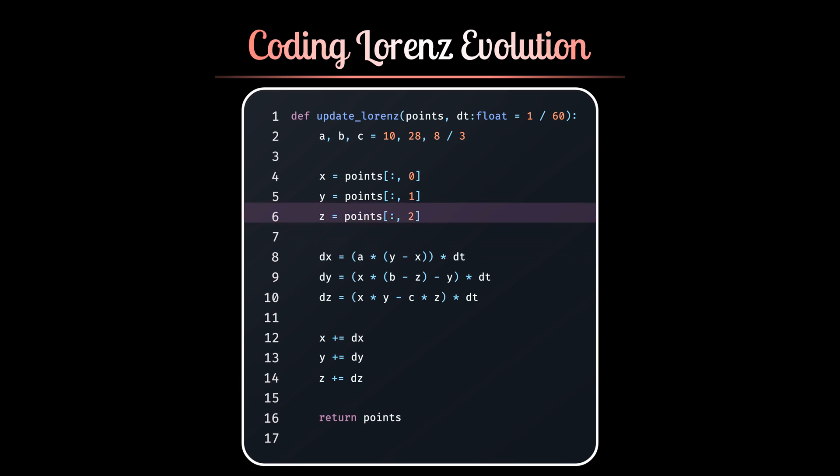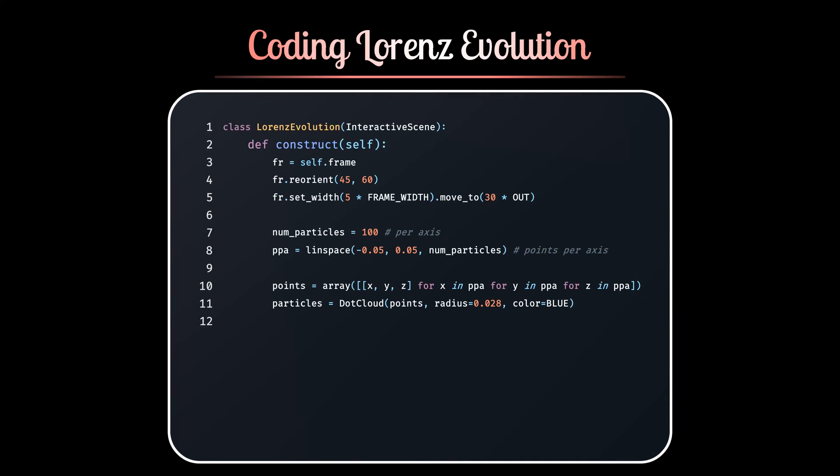Here, dt is our old friend, 1 divided by frame rate. And to apply this function continuously at every frame to these dots, we can use the addUpdater method. And after adjusting the frame size and orientation, we are done. See, this is how it turns out.